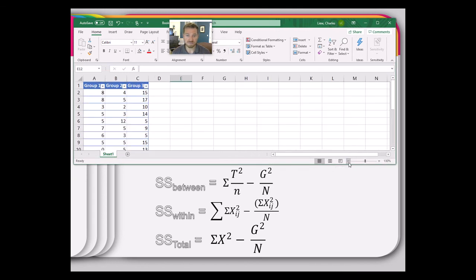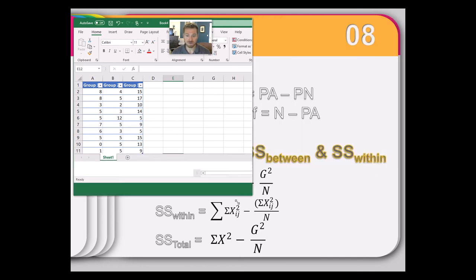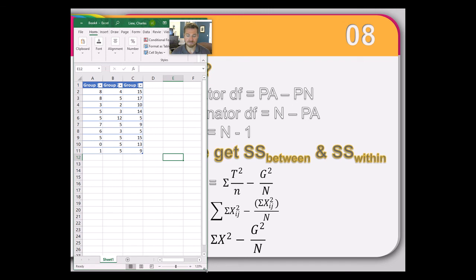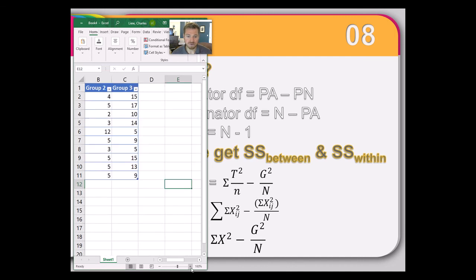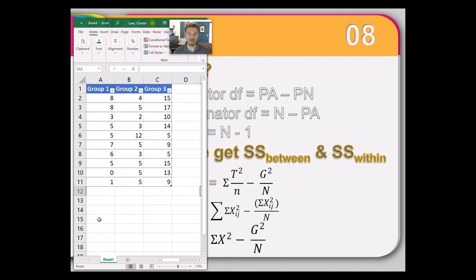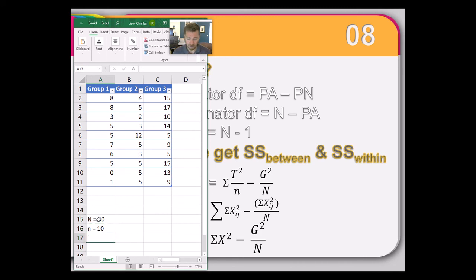Looking at the data in Excel: I've got data describing three different groups, each with ten scores, so each group has ten people. What can we already know? N — all people in the study — is 30. N per group, since it's evenly divided, is 10. K — number of groups — is three. Knowing those things, we can already get our DF terms: numerator DF is K minus 1 equals 2; denominator DF is N minus K equals 27.